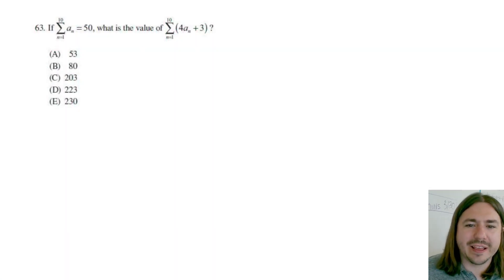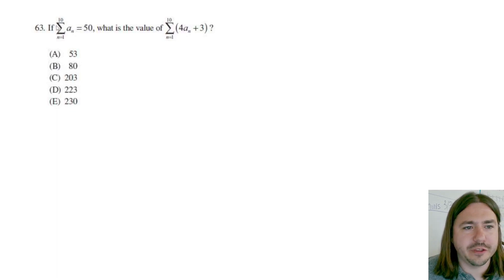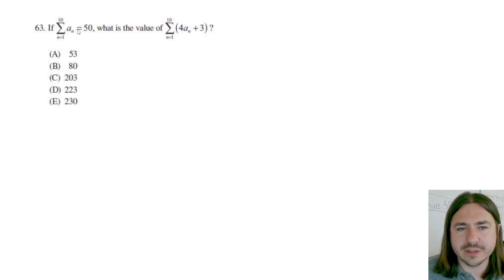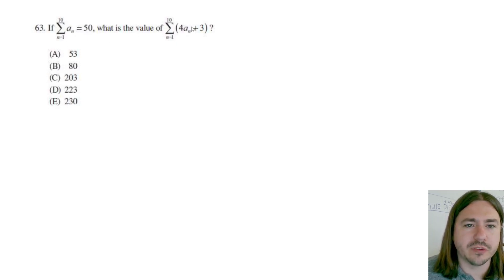Hey y'all, welcome back. Number 63 is a summation problem. It says if the sum of the terms of this sequence a sub n — if you add up the first 10 terms — it equals 50. So what is the value of this expression?